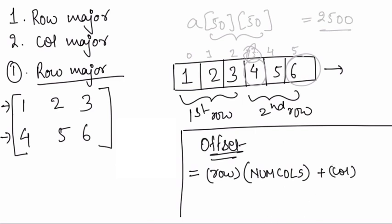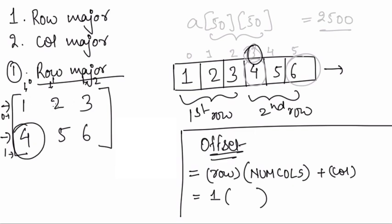Let's verify this for the element having value 4. Number 4 is located in the first row — this is the first row, this is the zeroth row, the zeroth column, first column and the second column. So for 4, the row where it was lying is 1, multiplied by the total number of columns — which is 3 — plus the column number where that element lies, which is 0. That gives an offset of 3, which is the same 3 we found by manually numbering.